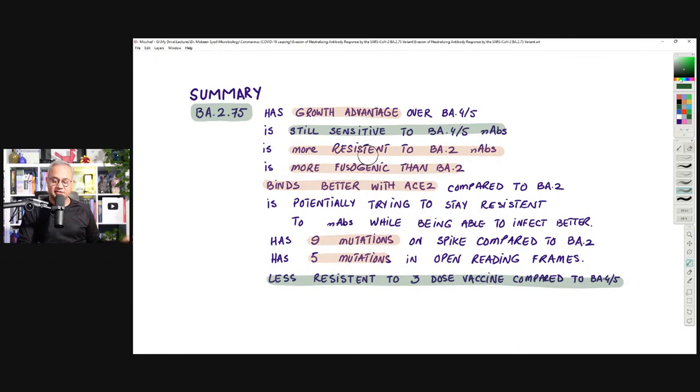Summary is the following. This is a summary of this study. And there are many studies. So I'm just talking about this one study from Ohio State University. This study says BA.2.75 has growth advantage over BA.4 and 5, but very mild, very slight. That is the word they use, slight growth advantage.